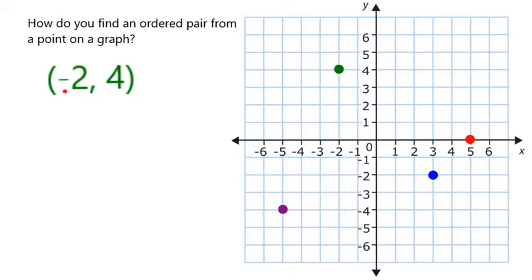The horizontal position always comes first. And if we look at this red dot here, we see that it is 5 in the positive horizontal direction, but it's neither up nor down. So that's going to be 5, 0.